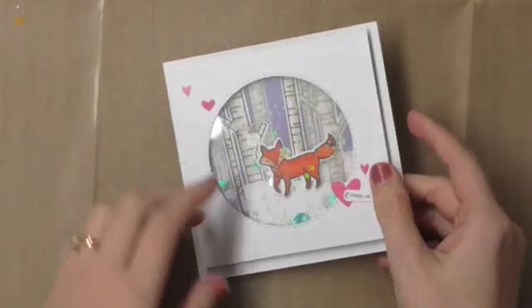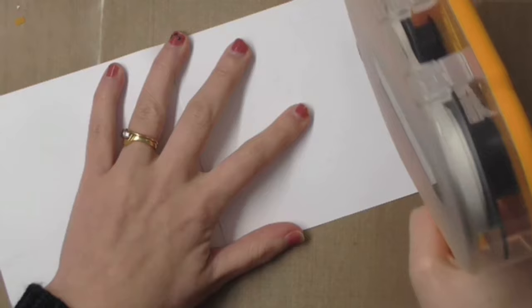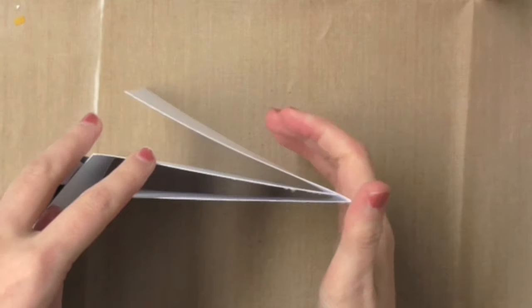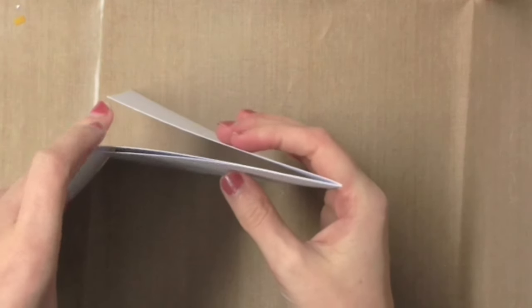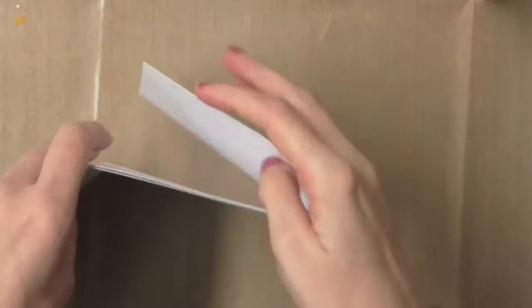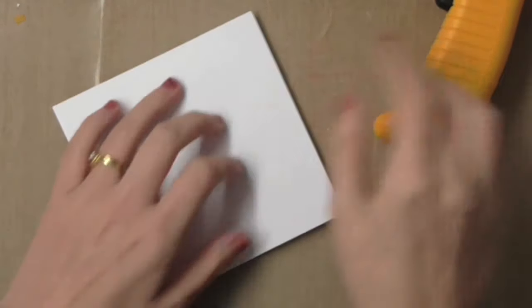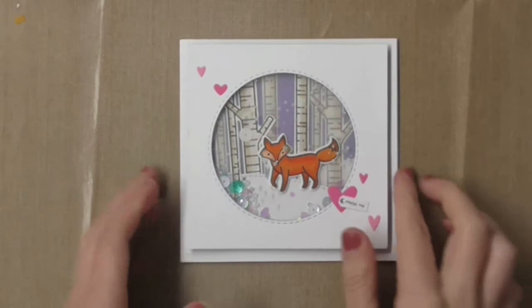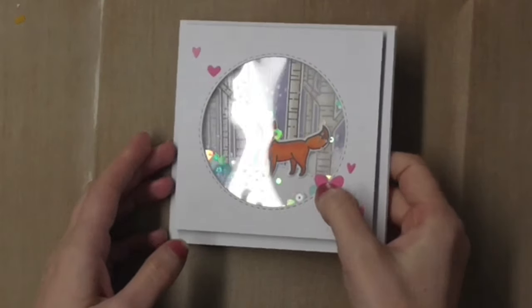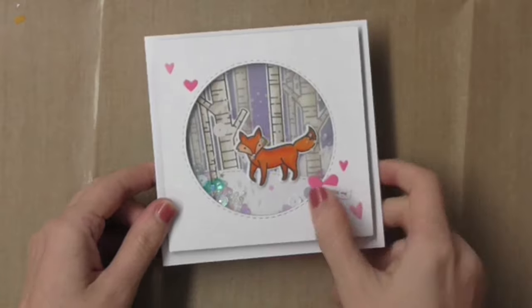I'm adding that to the big heart here with a gem and that just helps the recipient know that they get to press that little gem. I'm running some ATG adhesive along the inside, sliding my other card blank in the inside and then securing it down. I do this a lot with my shaker cards because sometimes if the front's too heavy the card won't stand up, it just falls flat on its face.